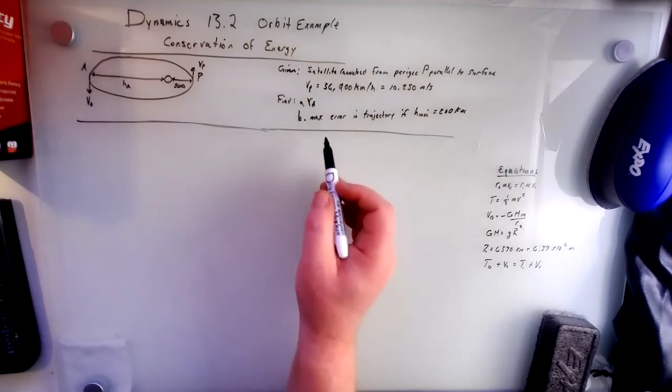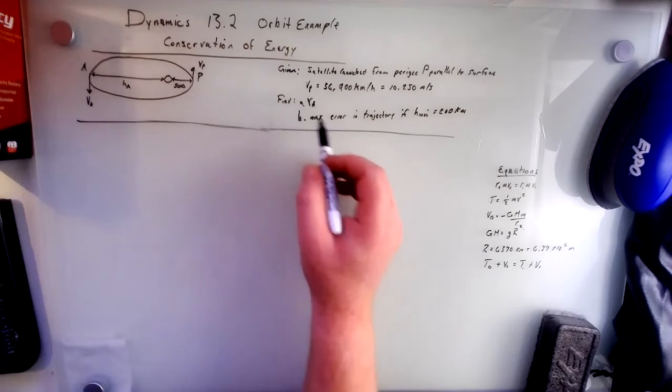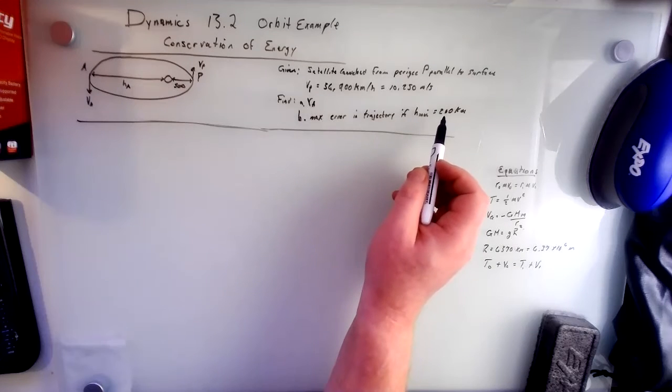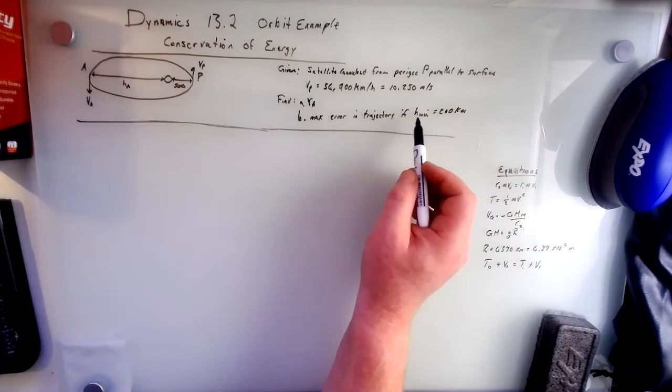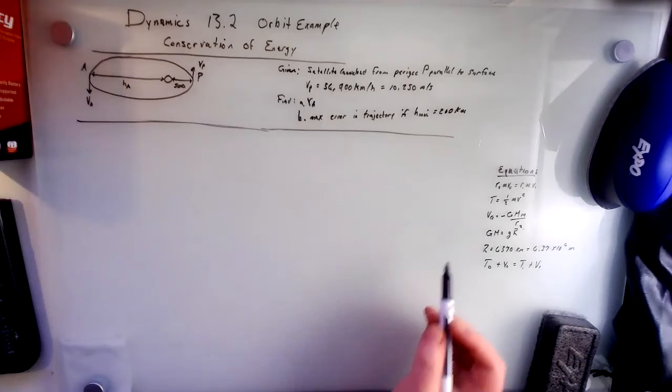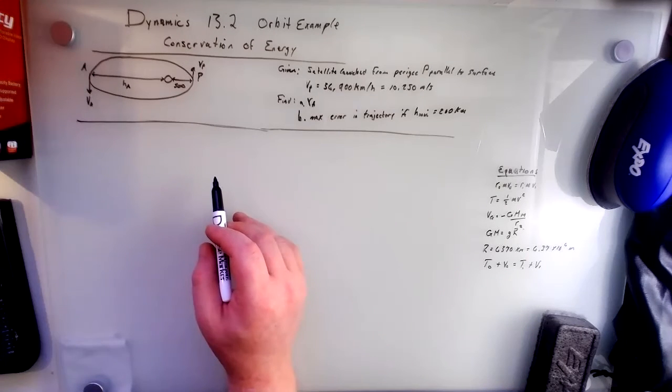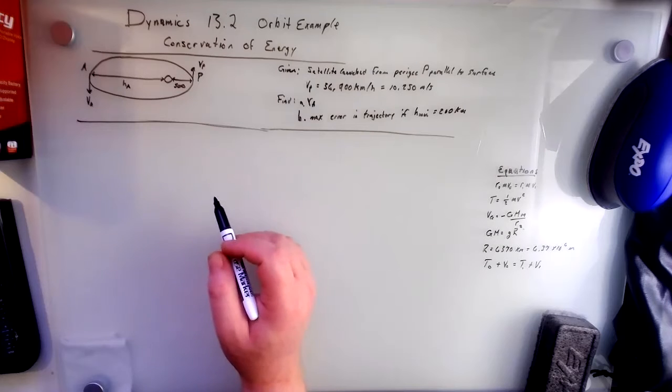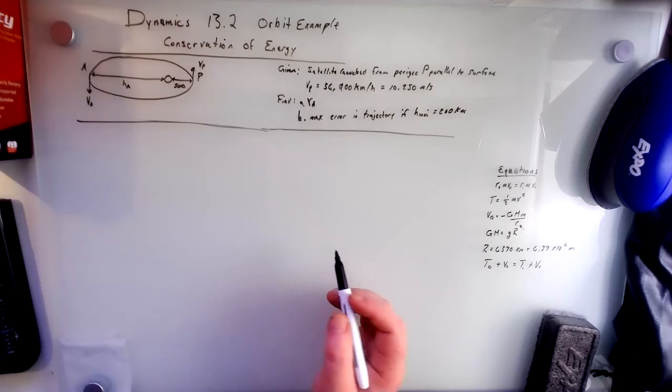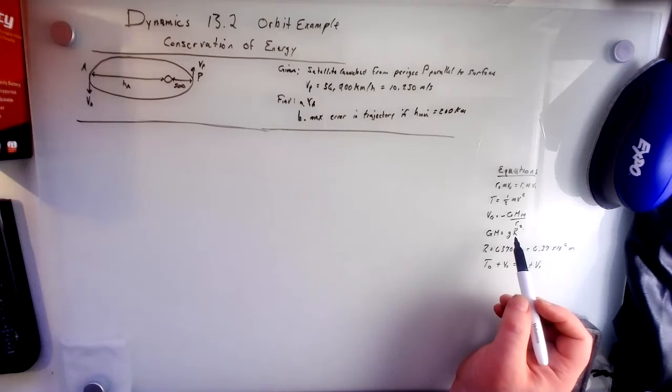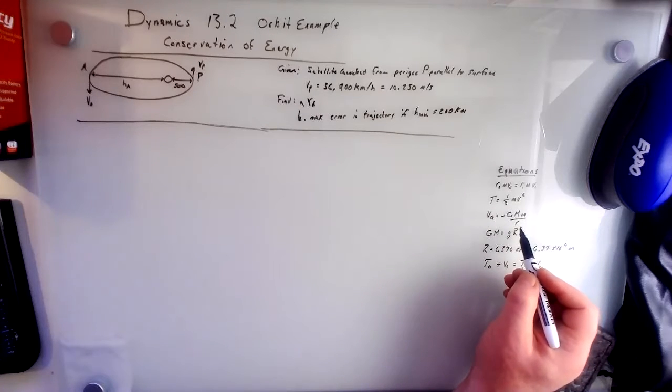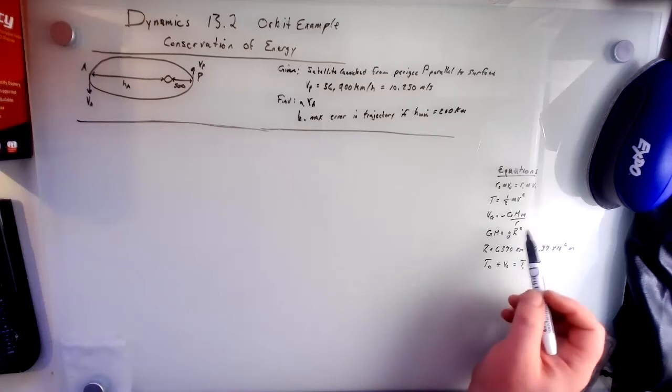And then the second part asks us to find the max error in trajectory if the minimum height is 200 kilometers. So when we derived the equations for potential energy, we didn't cover the big gravity equation, and it's pretty straightforward.